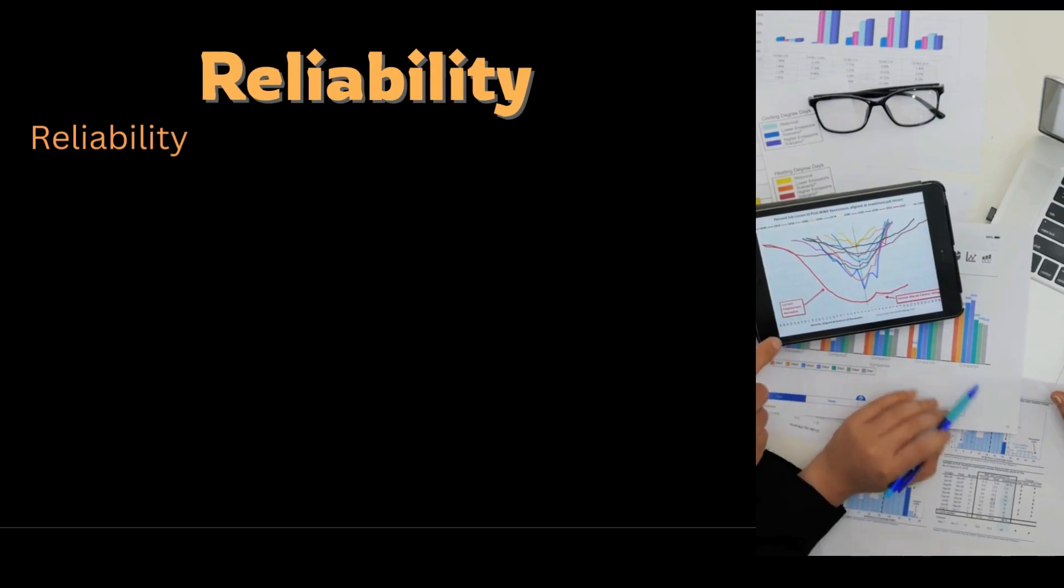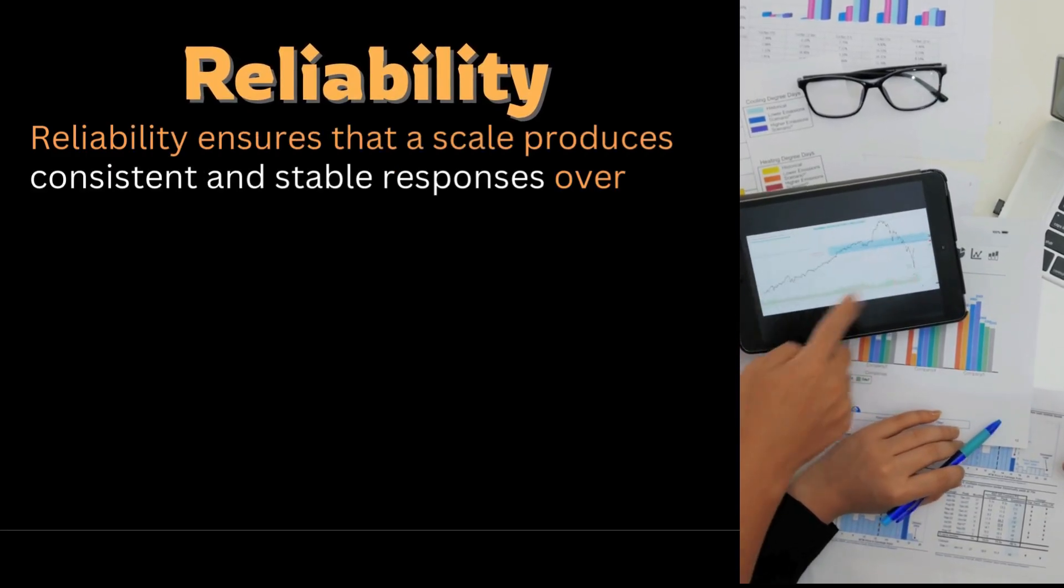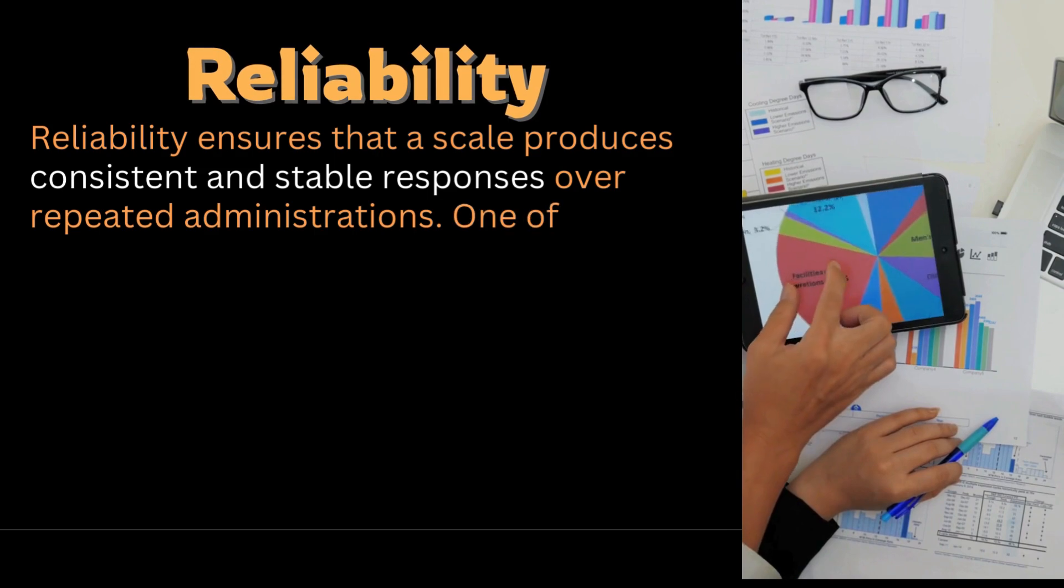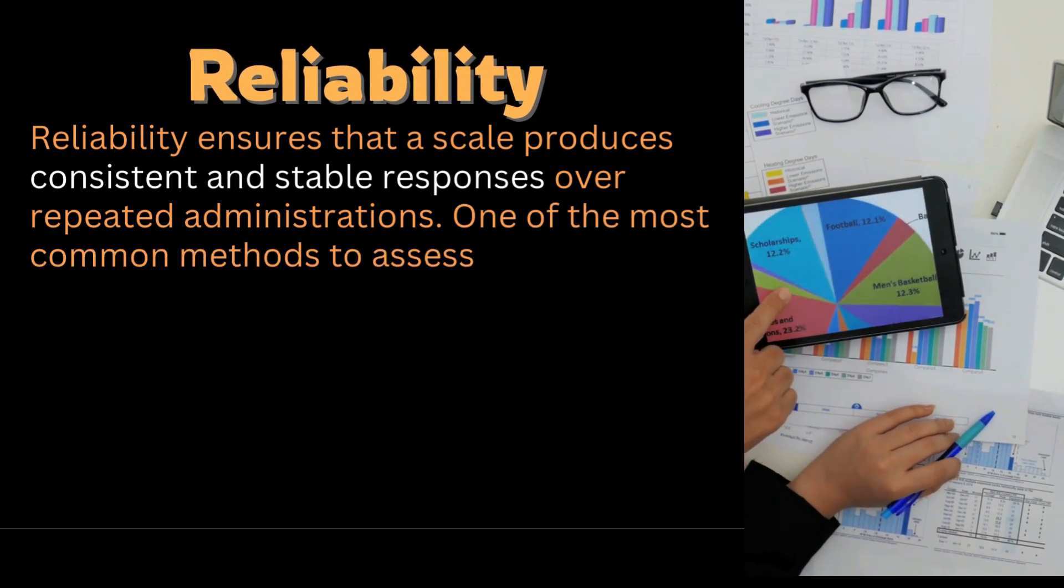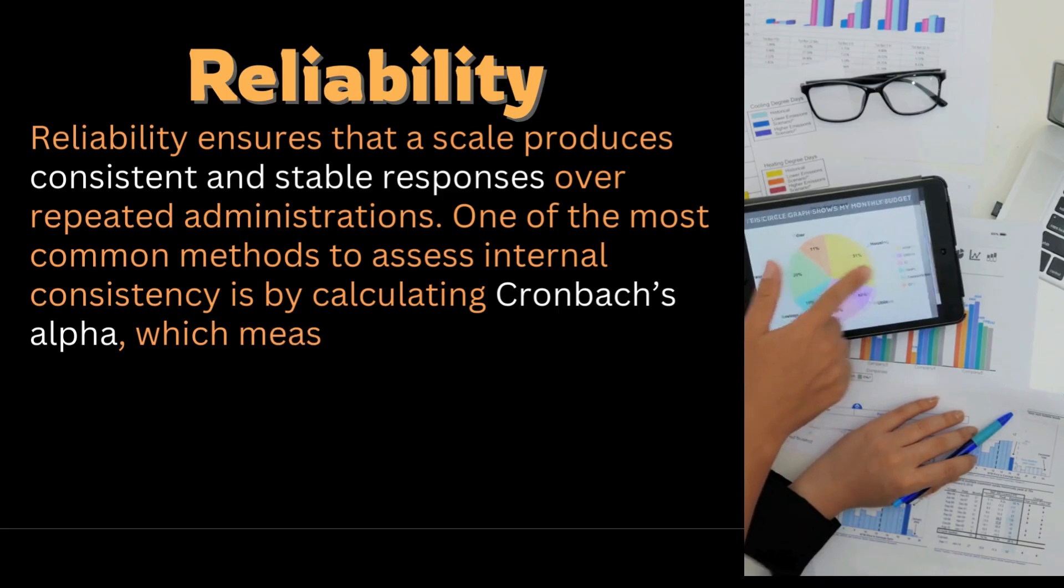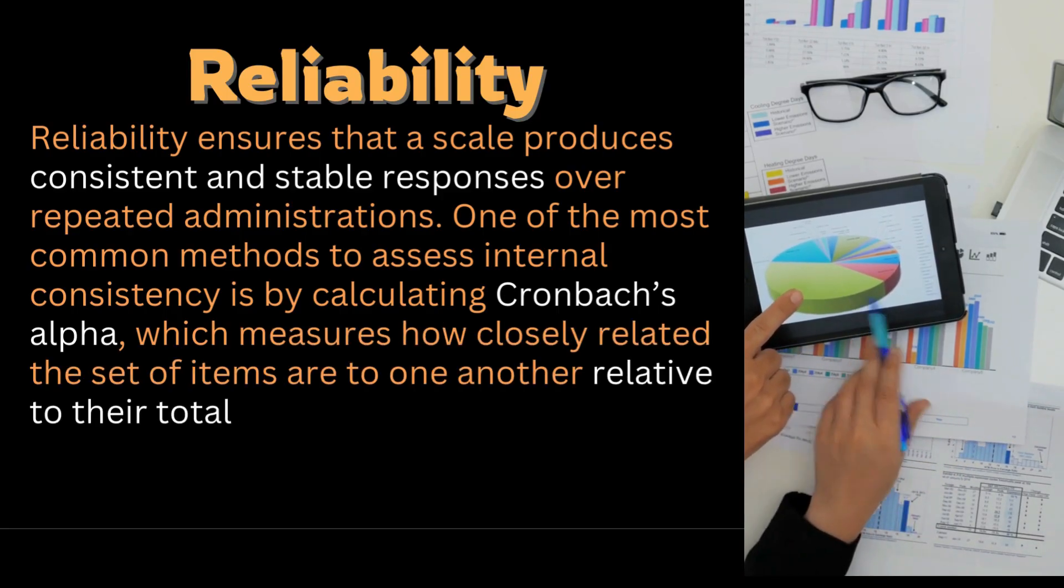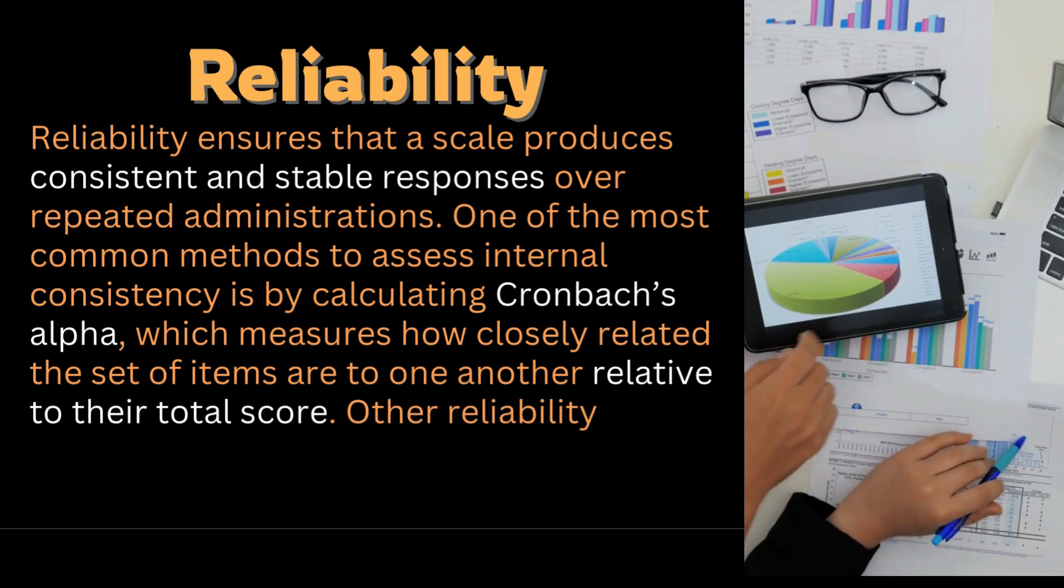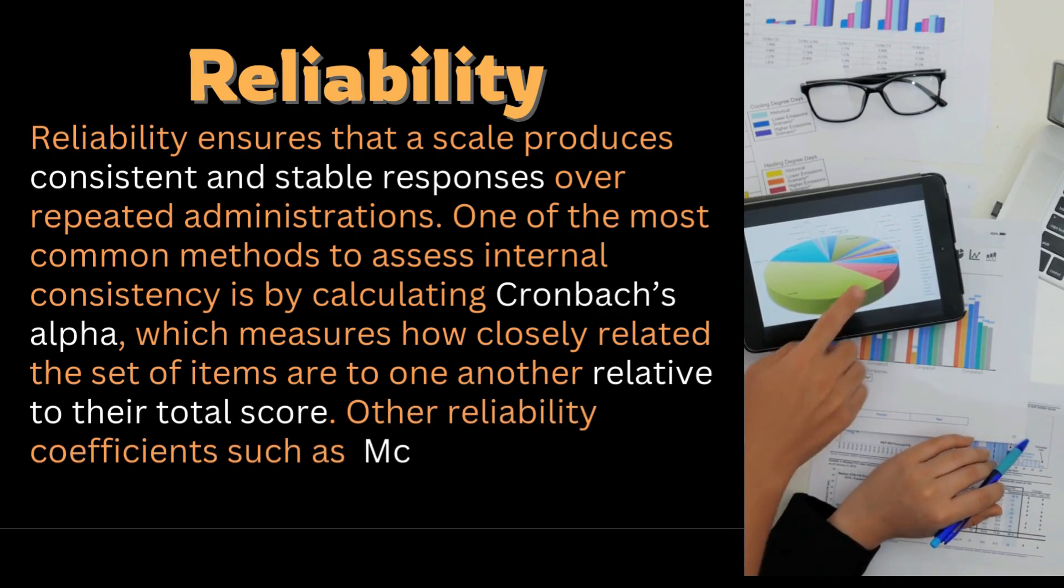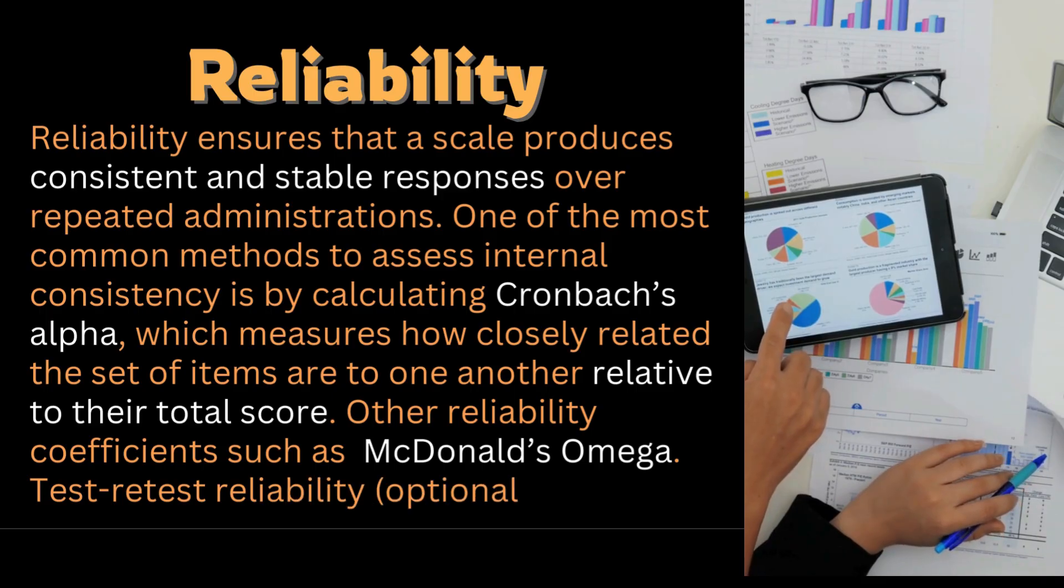Reliability ensures that a scale produces consistent and stable responses over repeated administration. One of the most common methods to assess internal consistency is by calculating Cronbach's alpha, which measures how closely related the set of items are to one another relative to their total score. Other reliability coefficients such as McDonald's Omega are there. Test-retest reliability is optional. It's done to assess stability over time.